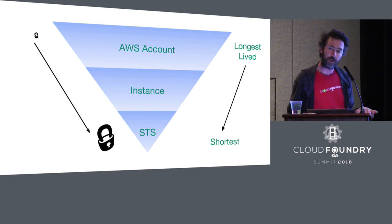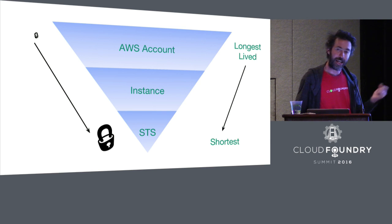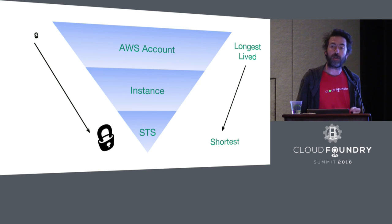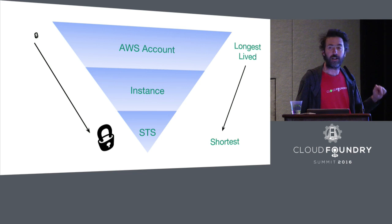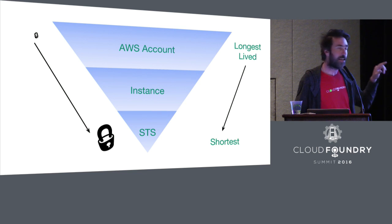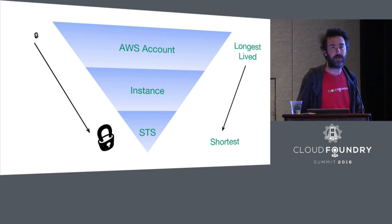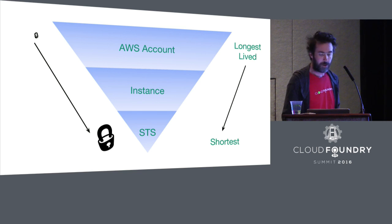So if I want to scale with Bosch, my instance has permission to do that. If you want a cloud controller that has permission to write to an S3 bucket, you can do that. If you have a go router that wants to register with your ELB, you can have dedicated instance role permissions for those things by assigning them through AWS IAM.